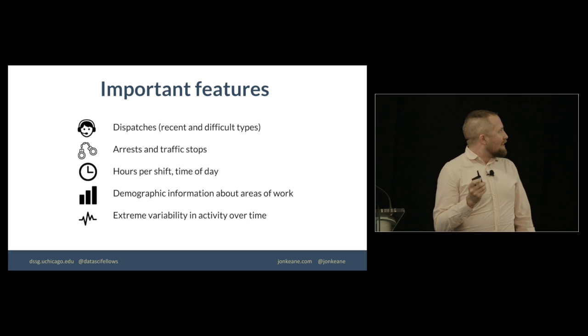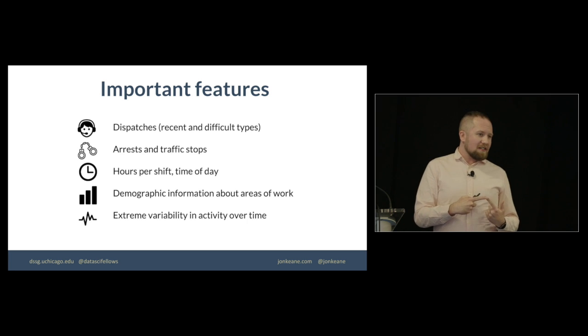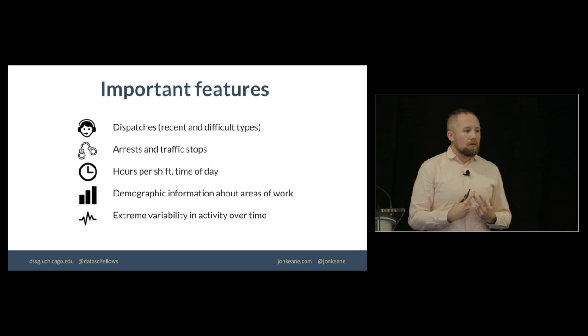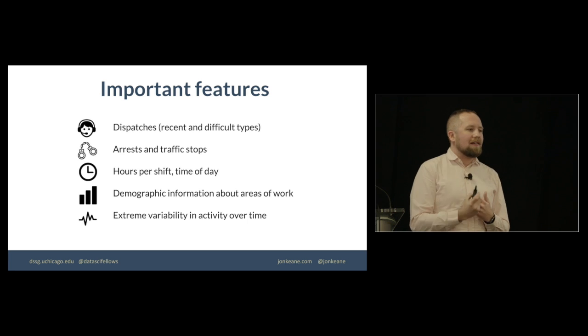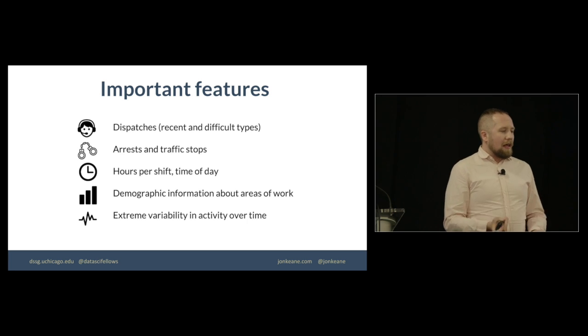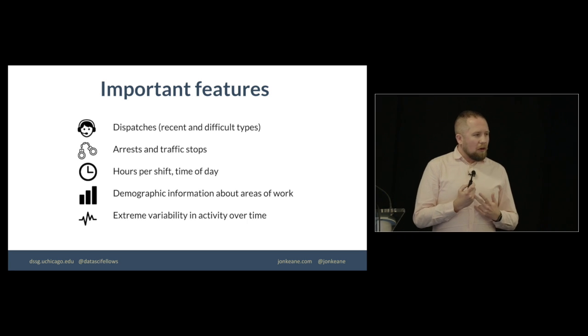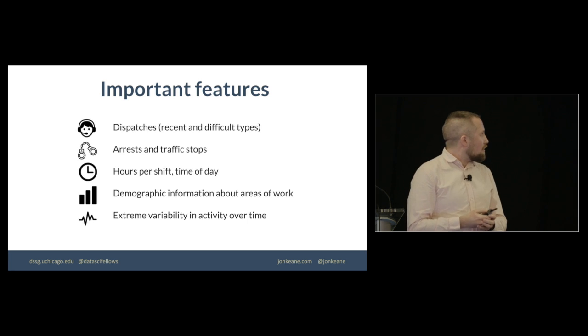So the important features that we had were dispatches, especially recent dispatches, as well as the types of dispatches that they saw. So if an officer was recently dispatched to a large number of very stressful situations, like a suicide call or a domestic violence, that led to an increased risk of having an adverse incident. Additionally, number of arrests and number of traffic stops, especially recently, was highly correlated with having an adverse incident.